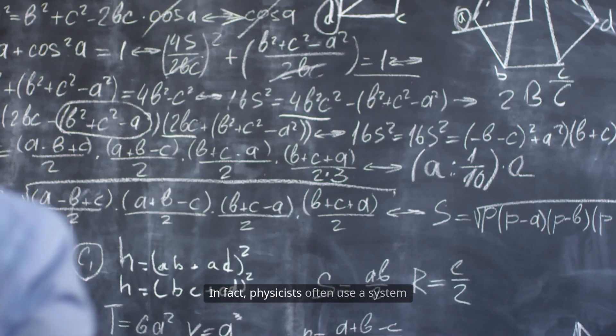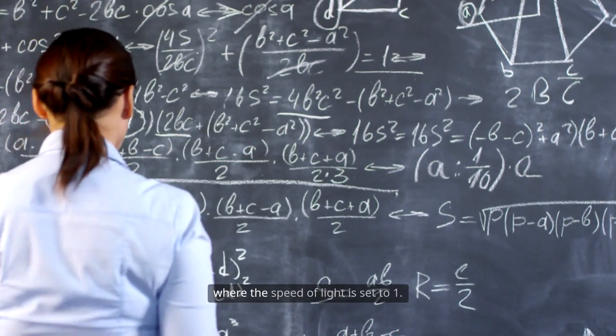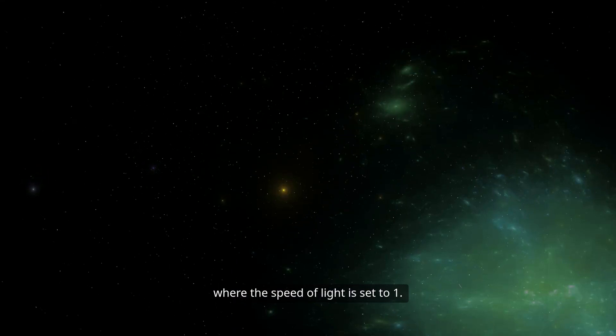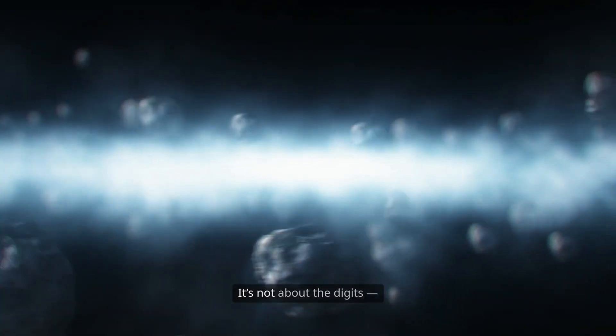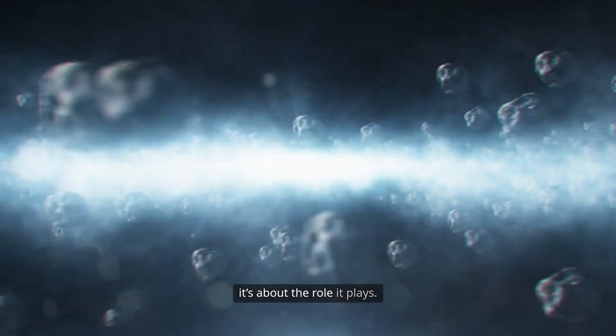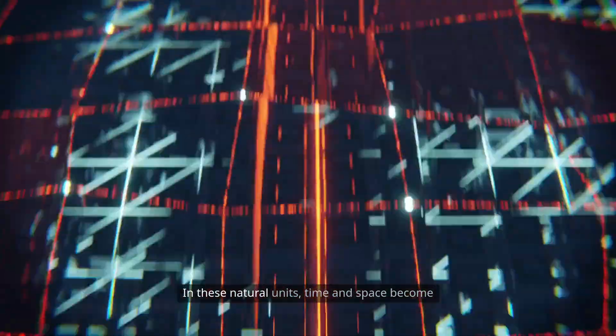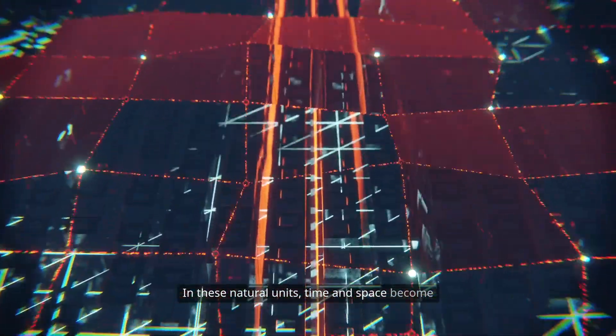In fact, physicists often use a system where the speed of light is set to one. That's how fundamental it is. It's not about the digits. It's about the role it plays. In these natural units, time and space become two sides of the same coin, and light is the thread that stitches them together.